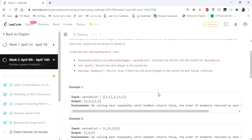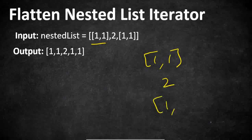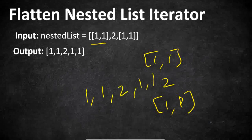Let's understand this problem with an example. Starting from the first element in the list, it is a list again — [1, 1] — and then an integer, and then again a list. If you get the integers from the list it is going to be 1, 1, 2, 1, 1. Every time we call the next function it is going to return these numbers in order.